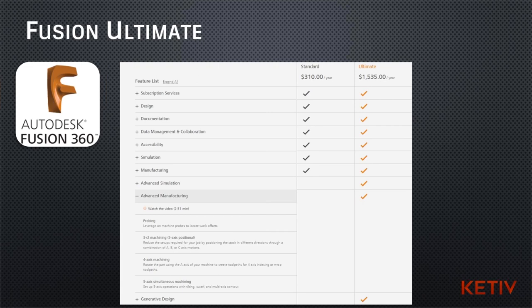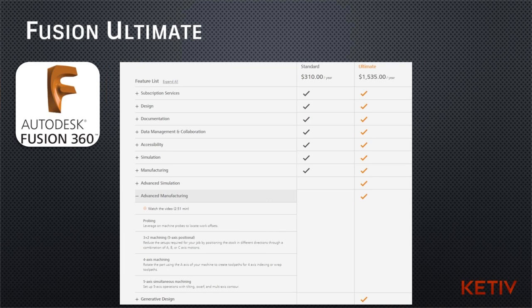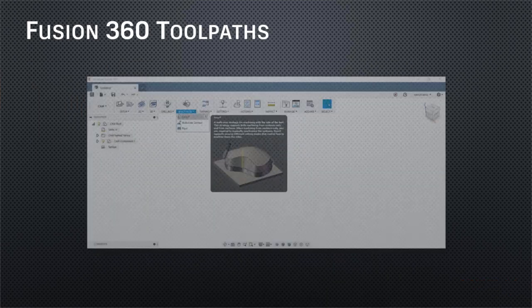First things first, you will need Fusion Ultimate in order to access these five-axis toolpaths. If you have the student version, you already have the Ultimate version of Fusion. I believe the hobbyist version also comes with Fusion Ultimate. If you fall in one of those categories, you do have the fourth and fifth axis capabilities. I have a list here showing the differences between the standard version and the Ultimate version of Fusion 360 — the biggest differences are your fourth and fifth axis toolpaths and your simulation.